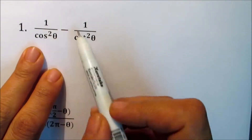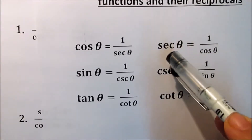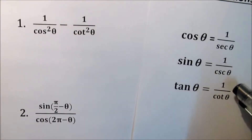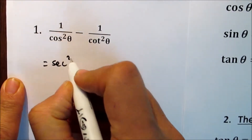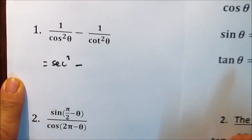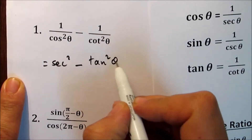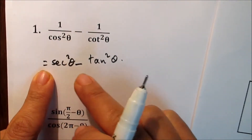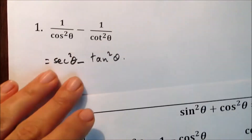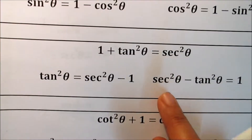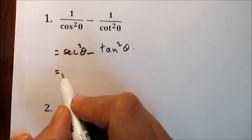Whenever it's 1 over something, recall the reciprocal identities. 1 over cosine is secant and 1 over cotangent is tangent. So, 1 over cosine squared is sec squared and minus 1 over cotangent squared is tan squared. Whenever it's a function squared plus or minus a function squared, recall the Pythagorean identities. We have sec squared minus tan squared, which equals 1.